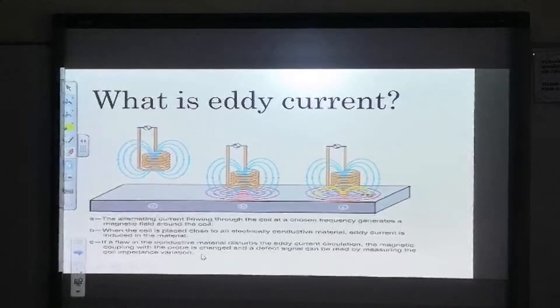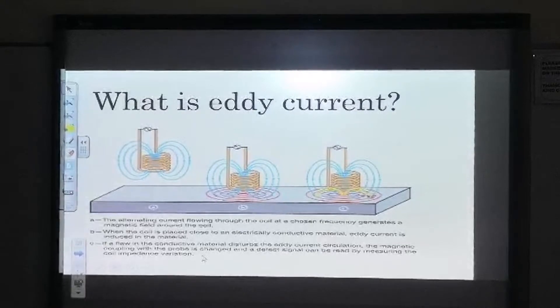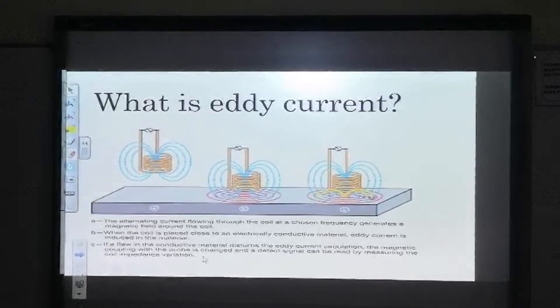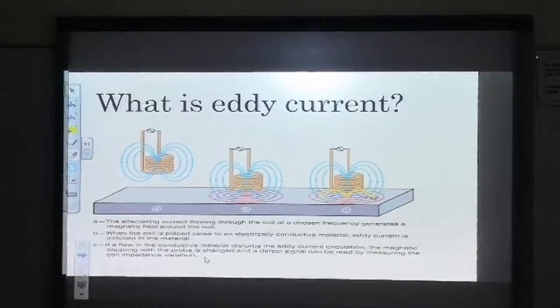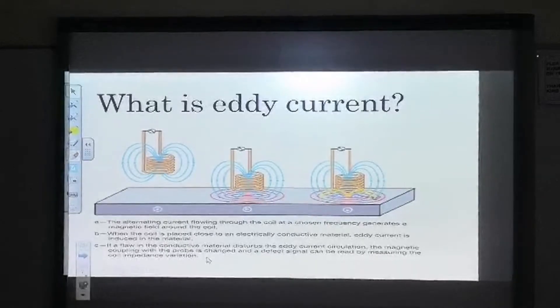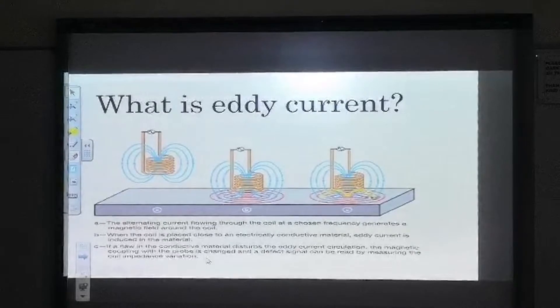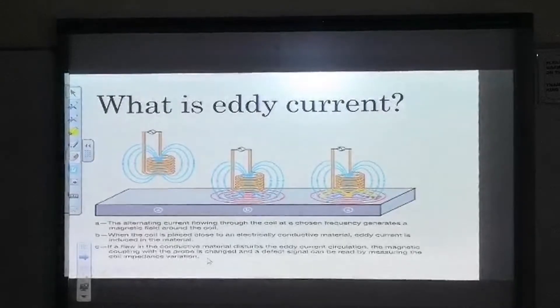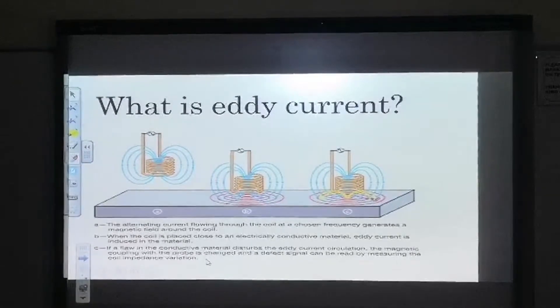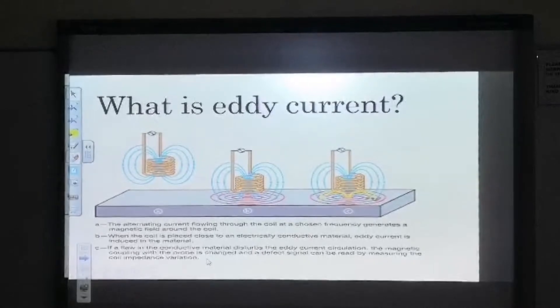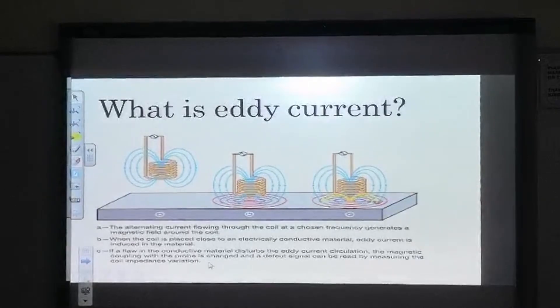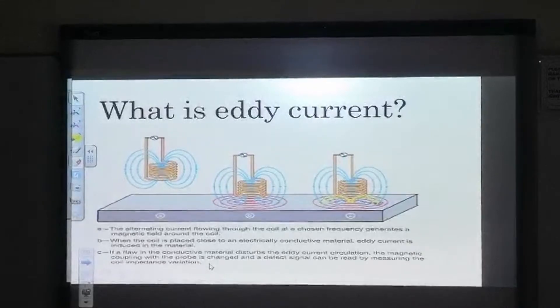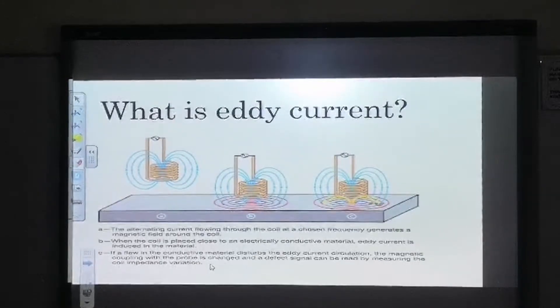They can be created when a conductor is moving through a magnetic field, or when the magnetic field surrounding a stationary conductor is varying. For example, anything which results in the conductor experiencing a change in the intensity or direction of a magnetic field can produce eddy currents.